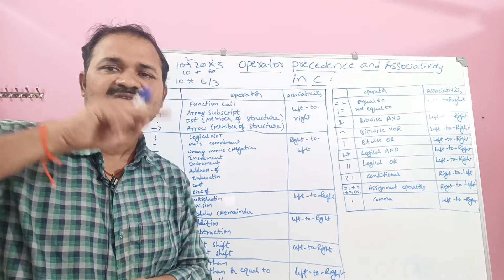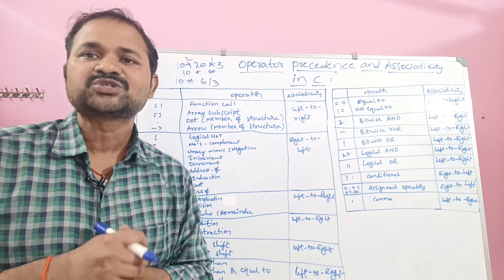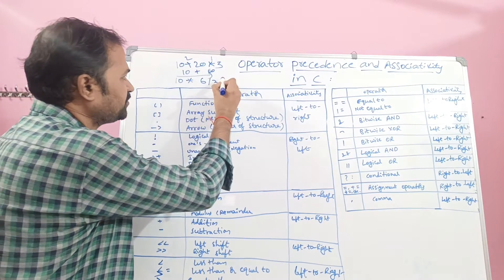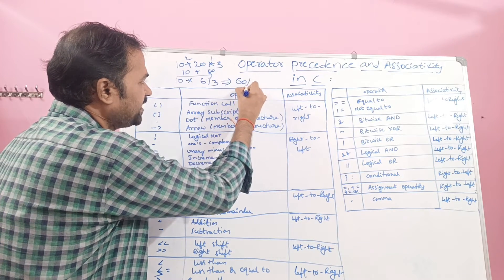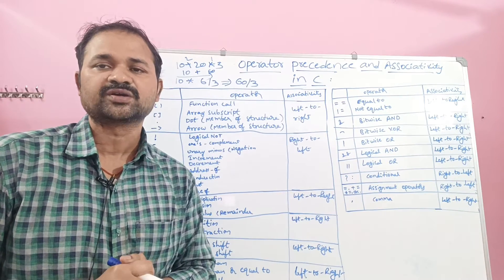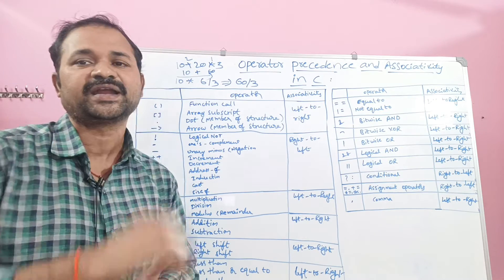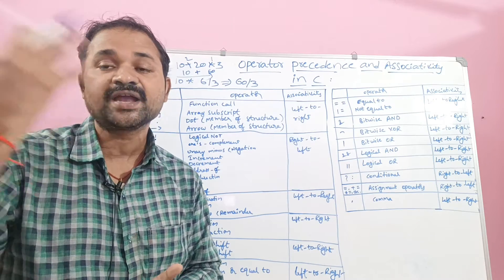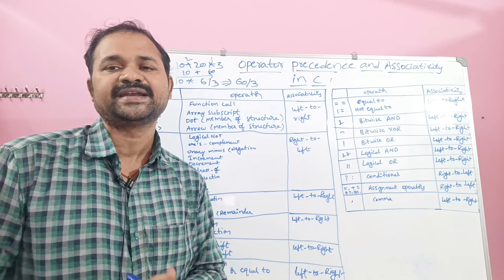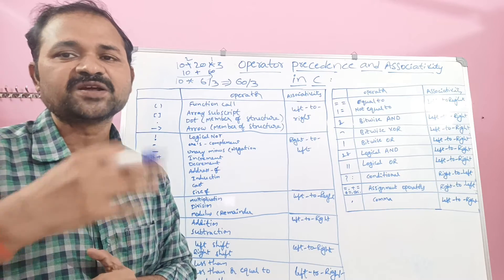Associativity may be either from left to right or from right to left. For arithmetic operators, associativity is from left to right. So first 10 into 6 will be executed, giving 60. Next division will be executed: 60 by 3 gives 20. So 20 will be the output. Associativity determines in which order to evaluate an expression when it contains two or more operators of equal priority.